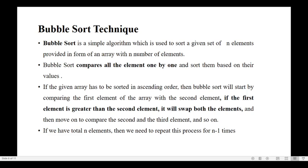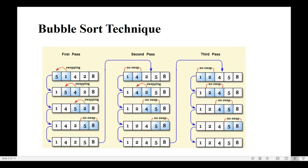If the given array has to be sorted in ascending order, then bubble sort will start comparing from the first element to the second element. If the first element is greater than the second element, it will do a swapping of both elements, then move on to compare the second and third element, and so on.